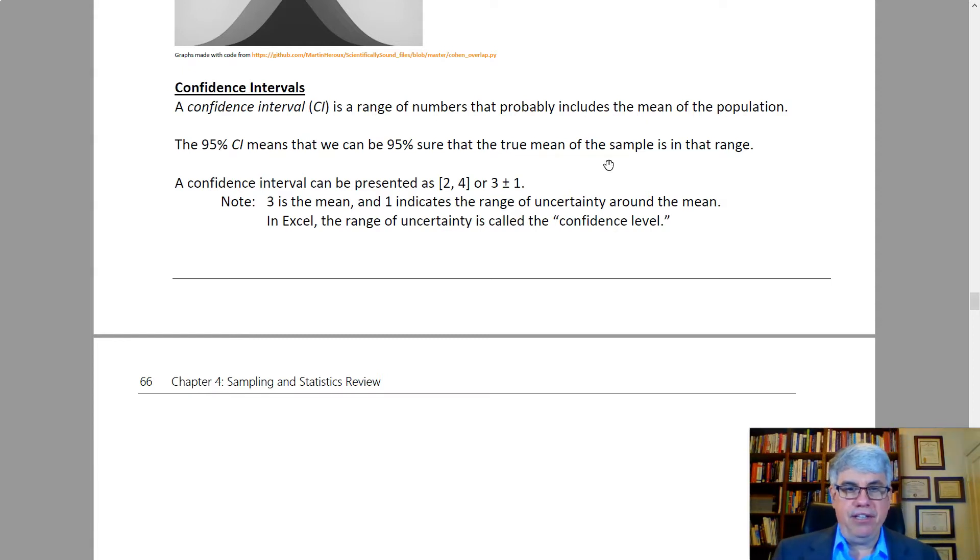We can calculate these real easily in Excel in descriptive statistics. This range of uncertainty, this plus or minus one, is called the confidence level in Excel. The confidence interval is a good way of expressing how much uncertainty we have concerning the average that we've measured.